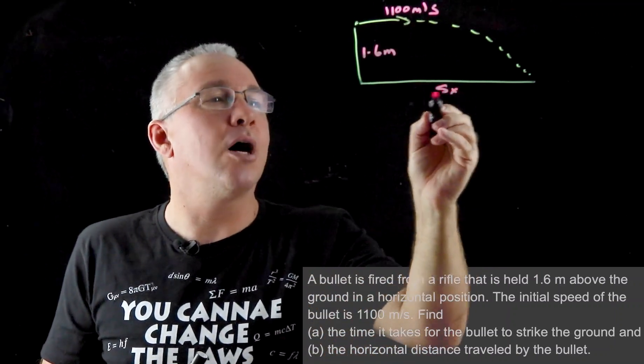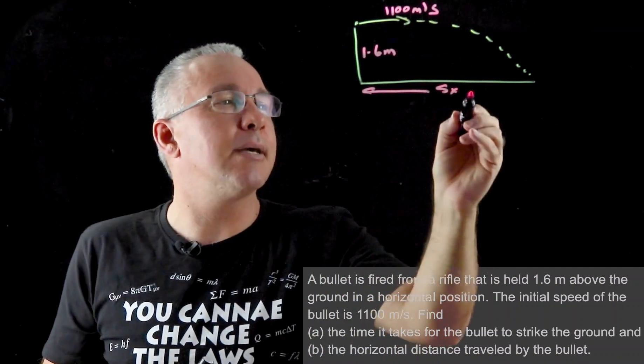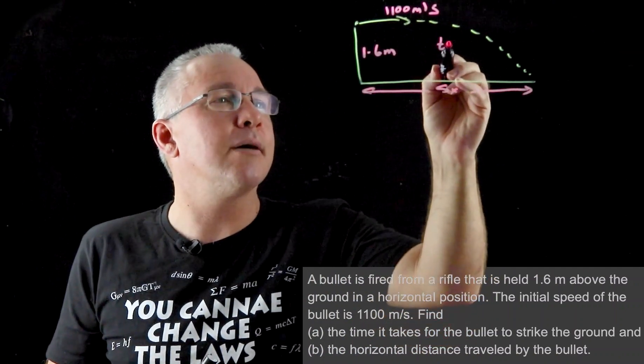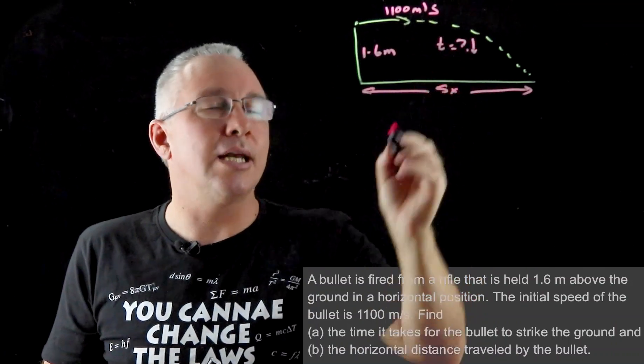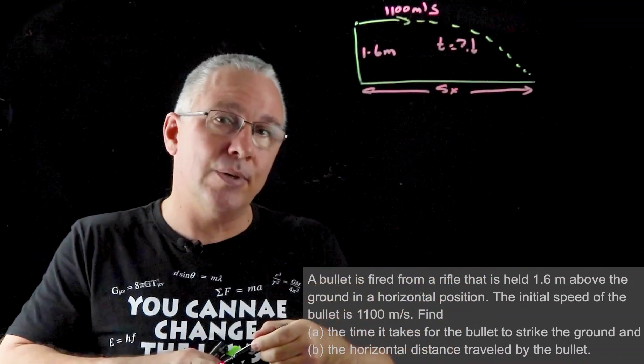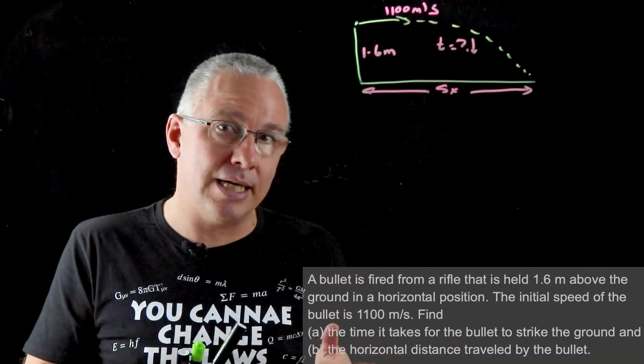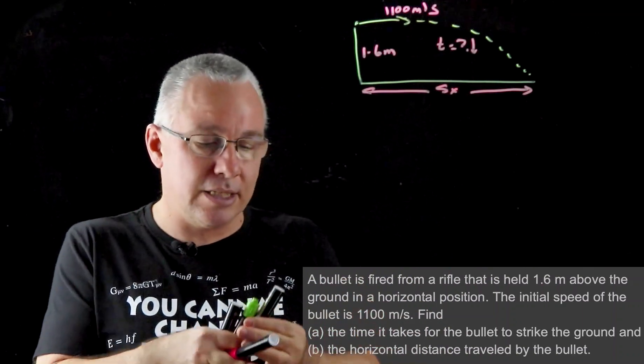Now we can also label the things we're looking for. We need to know the total horizontal displacement, which is this amount, and we need to know the time it takes to go down. So everything's now labeled. We're now into the second part of the RUDE aspect and that is the data.